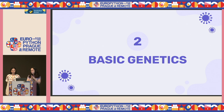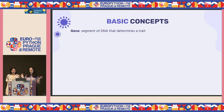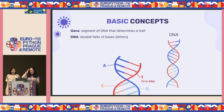Now, a very quick basic genetics class. It is very simple, and it is just for you to understand the practical case. A gene is a segment of DNA that determines a trait — for example, many genes determine the color of our eyes. DNA is nothing more than a double helix of bases. The bases are just letters; all of our DNA is composed of four letters: A, T, C, and G.